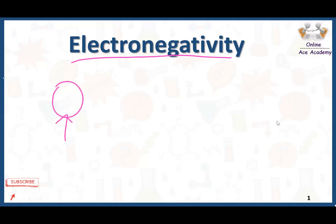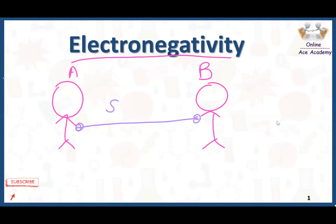Here we have a person A and on the other side we have a person B. This person A and person B both are having a rope in between and they both are sharing this rope. Both are exerting some energy in order to pull this rope. The same happens in the case of atoms.